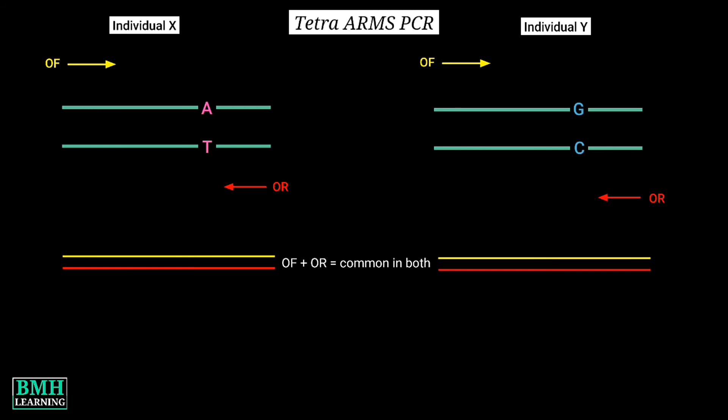So this means, let's say in case of Individual X, the internal forward primer is not going to bind. Why? It's because the nucleotide sequence at the 3' end of the primer is not matching with the DNA sequence.